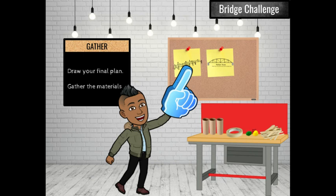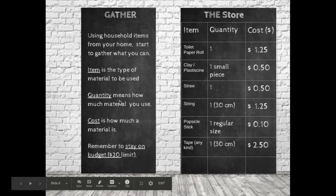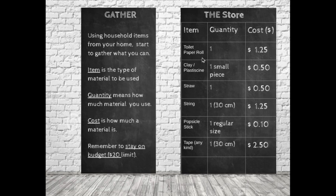Gather. Draw your final plan. If you're going to amalgamate ideas or maybe you had two choices, choose your final plan. Once you've chosen this, it is important to start gathering the materials. Using household items from your home, start to gather what you can. The item is the type of material to be used: toilet paper, clay plasticine, maybe play-doh, straw, string, popsicle stick, tape of any kind. Quantity means how much material you would use — for example, one toilet paper roll, one small piece of clay, one piece of straw, one string which is 30 centimeters in length.